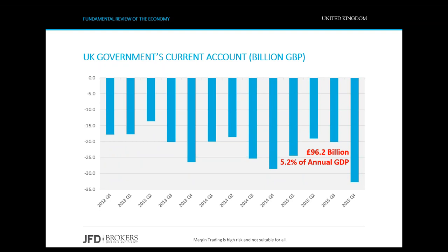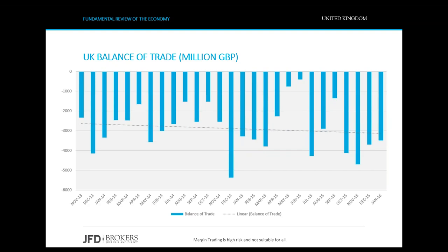Another significant sector of GDP, and the last one we'll study, is the government's current account. The government's current account deficit widened to a record high in the last quarter of 2015. For 2015 as a whole, the trade deficit ballooned to £96.2 billion, or 5.2% of the annual GDP, the highest since records began in 1948. It's worth mentioning that since Q3 of 1998, the current account has never turned to a surplus. A significant factor that negatively affects the current account is the negative trade balance. Over the last 15 years, the UK has had a negative trade balance, which drives extremely high deficit in the current account.